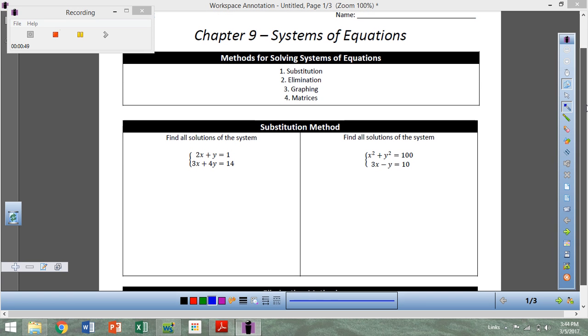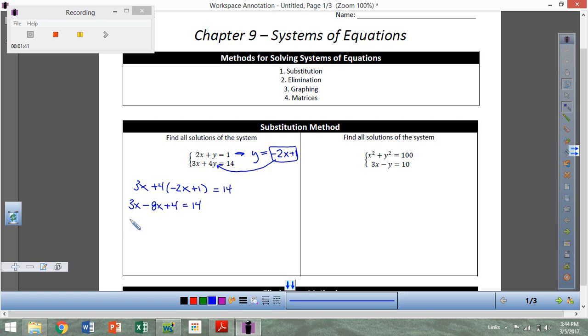So the first step is substitution. Remember, if you want to solve a system of equations using substitution, the first thing that you need to do is you need to take one of your equations and solve it for one of the variables. The easy thing to do here would be to take this first equation and solve this for y. So if I subtract the 2x over, it would be y equals negative 2x plus 1, and then I'm going to substitute this in for y in the other equation. So I'm going to have 3x plus 4 times negative 2x plus 1 equals 14. I'm just going to solve this and then plug it back in and get y. So if I distribute the 4, that's going to be negative 8x, and then plus 4 equals 14. That's going to give me negative 5x. If I subtract the 4 over, that's going to give me 10, so x is negative 2.